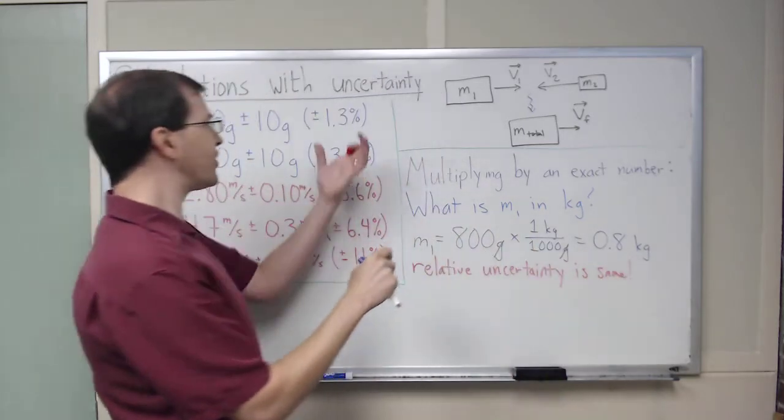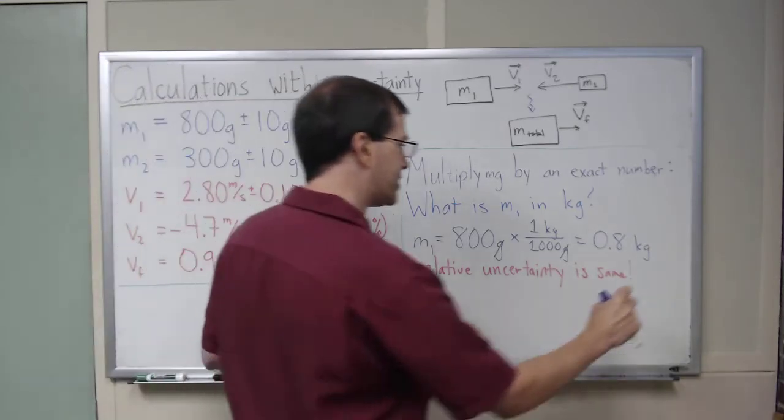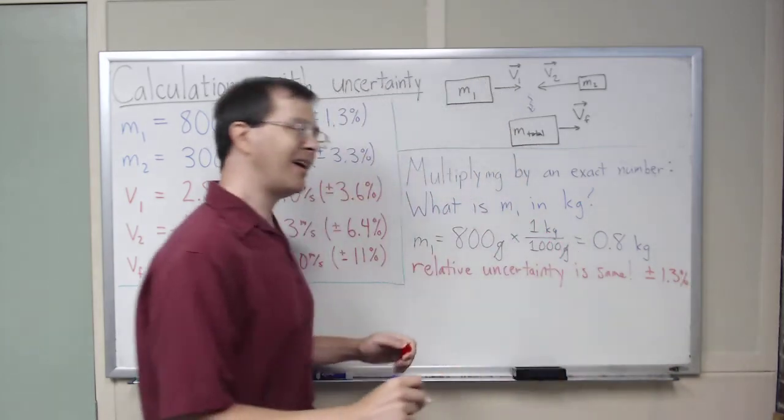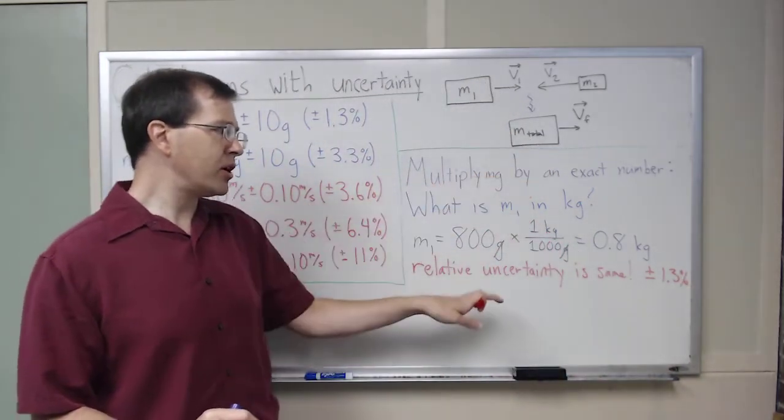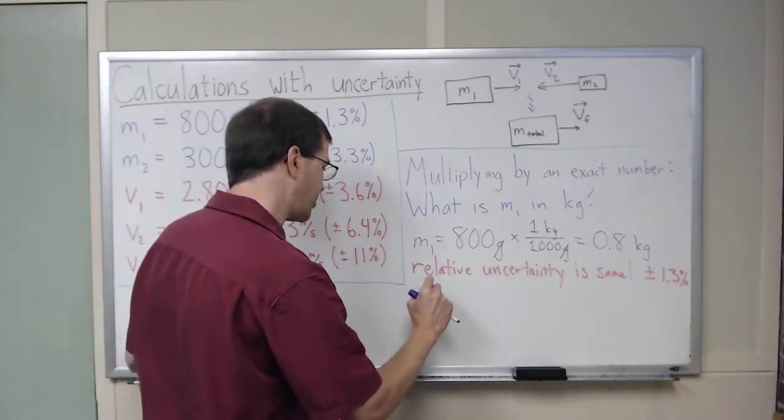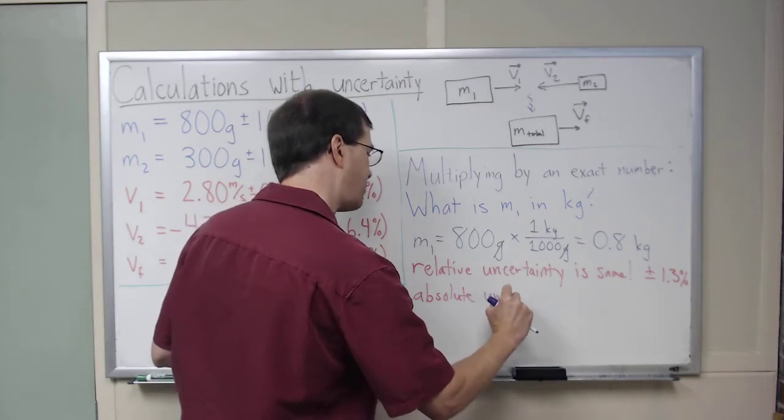So relative uncertainties are these percentages here, and so that means this is still plus or minus 1.3%. When you multiply by an exact number, the percent uncertainty, the relative uncertainty is the same, and the absolute uncertainty is multiplied by the same quantity.